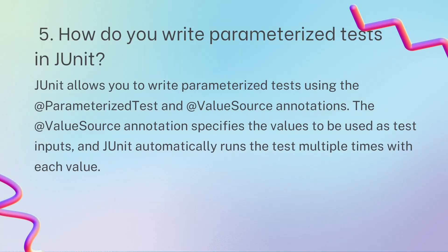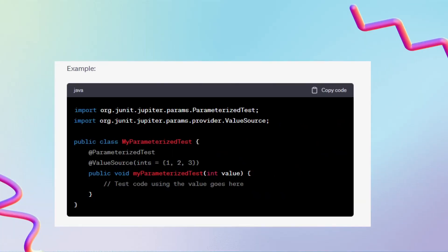Next question: how do you write a parameterized test in JUnit? For parameterized tests, you use the @ParameterizedTest annotation along with @ValueSource. The @ValueSource annotation specifies the values to be used as test input, and JUnit automatically runs the test multiple times with each value. For example, you annotate with @ParameterizedTest and @ValueSource with integers like 1, 2, 3, and the test executes for each value.